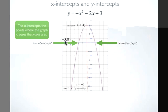Our first x-intercept is at (-3, 0). y is equal to 0, and x is equal to negative 3.